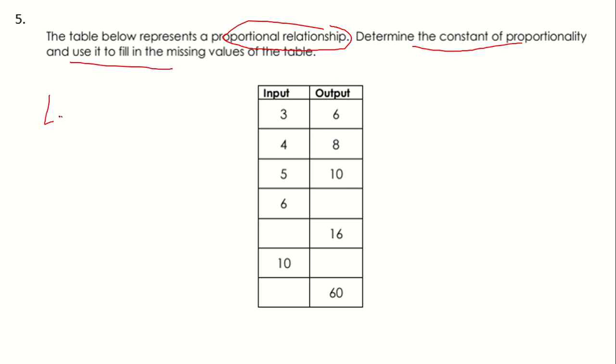So you can find our COP by dividing our y value by our x value. Input is going to be the independent variable, output is going to be the dependent variable. So that's going to be 6 divided by 3, which is equal to 2.